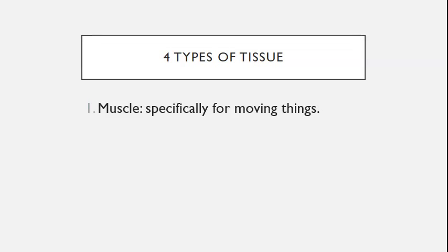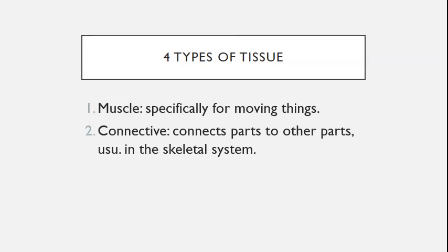Number two is connective tissue. Connective tissue connects parts to other parts. Examples of connective tissue are bones, ligaments, tendons, cartilage, and even blood. Connective tissue is often found between other types of tissue.